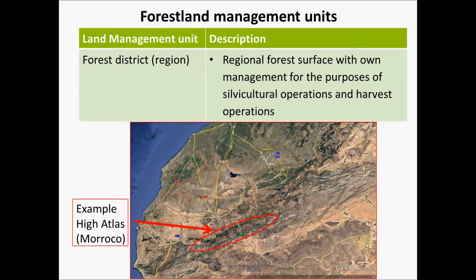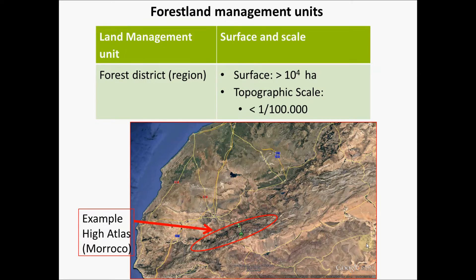The forest district or region is a regional forest surface with its own management for the purposes of silvicultural operations and harvest operations. As an example, I show you here the High Atlas in Morocco, which defines the limit between the Mediterranean region and the Saharan desertic region. The forest district has normally a surface of more than 10,000 hectares and the topographic scale used in cartography is around 1 to 100,000.